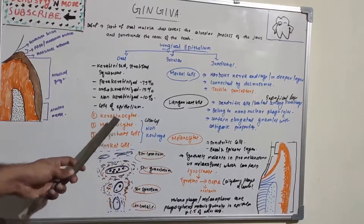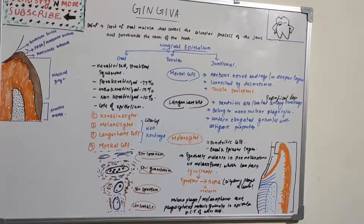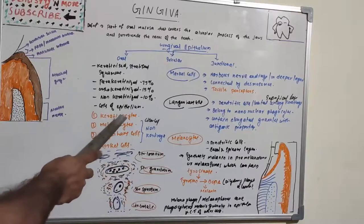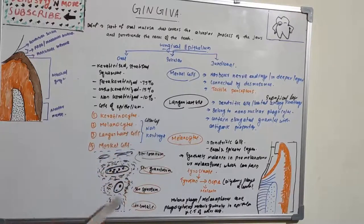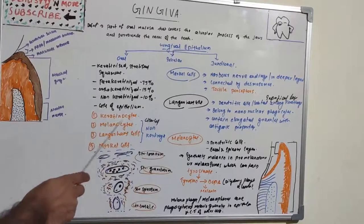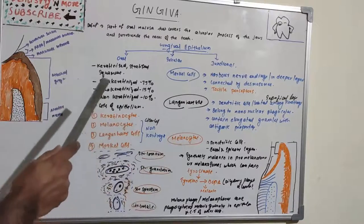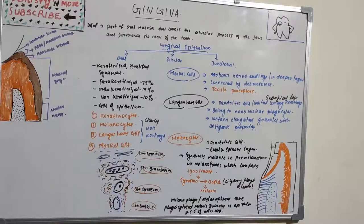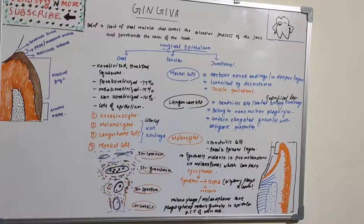Cells of the epithelium include keratinocytes and non-keratinocytes. Non-keratinocytes are also known as clear cells. We have three types of non-keratinocytes in the oral cavity: melanocytes, Langerhans cells, and Merkel cells. These are very important commonly asked short notes in exams. Note: do not confuse Langerhans cells of the oral epithelium with Langerhans cells seen in tuberculosis pathology — they are different.